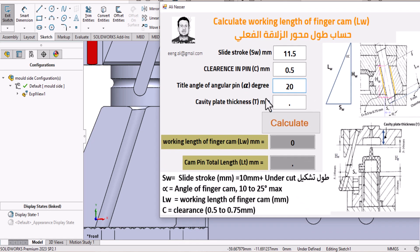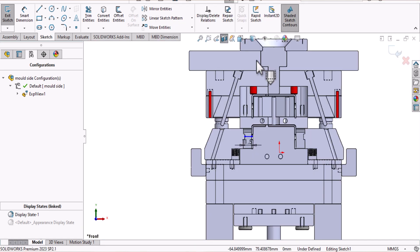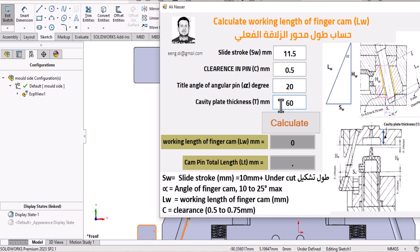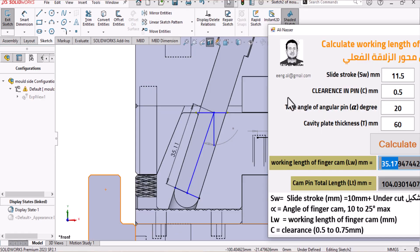By calculating the thickness of cavity plate, we find it's around 60 millimeters. So after calculating, I found the working length or actual length is around 35 millimeters. Let's check - as you can see here in this example with this tool. That's all about how to calculate the working length of finger cam.